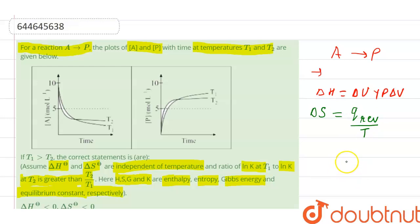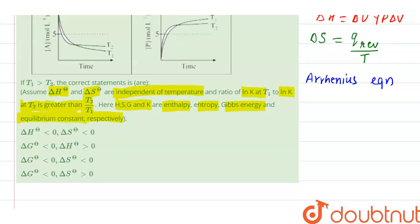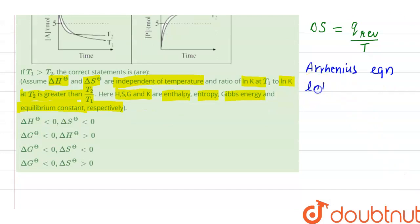And according to Arrhenius equation, what is Arrhenius equation? Log K equal to minus Ea upon RT plus log A, where K is rate constant, Ea is activation energy, T is temperature, R is gas constant, A is pre-exponential factor.